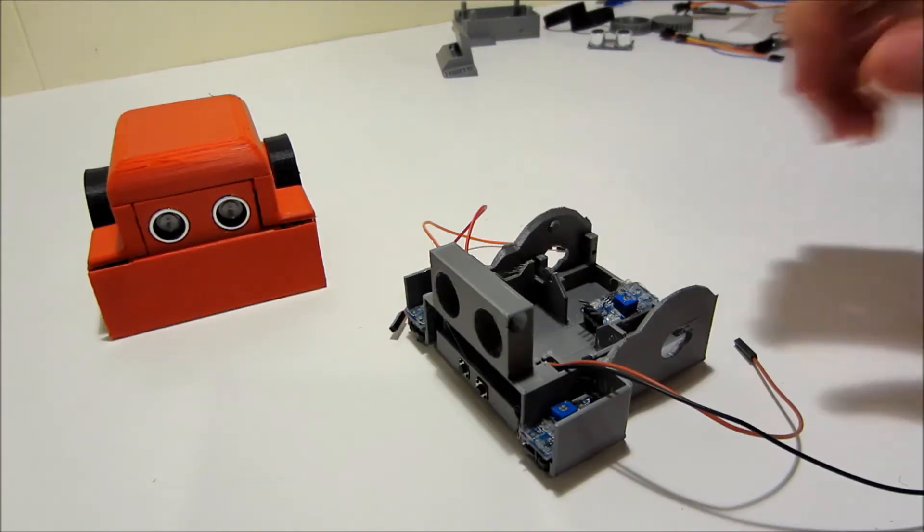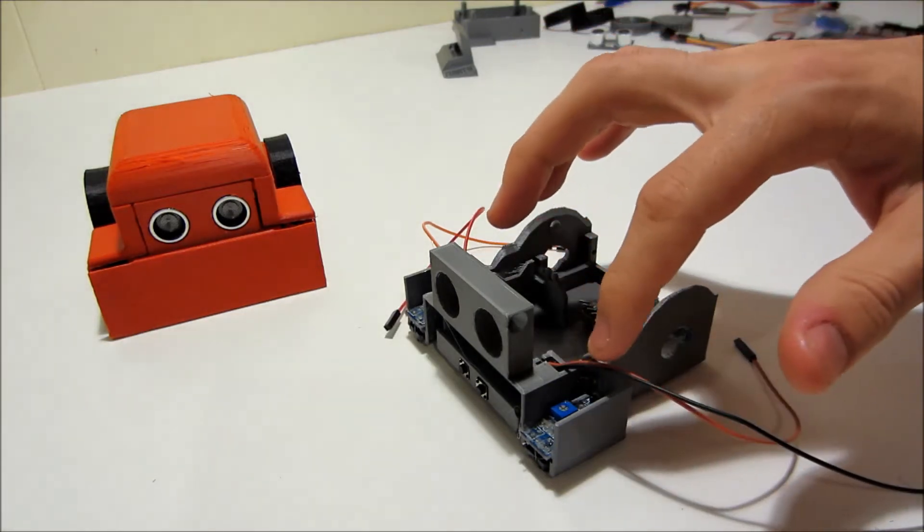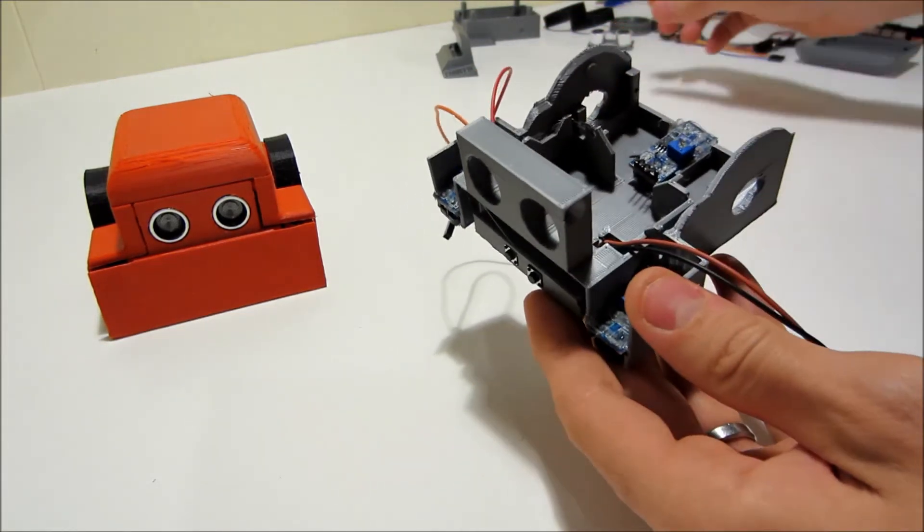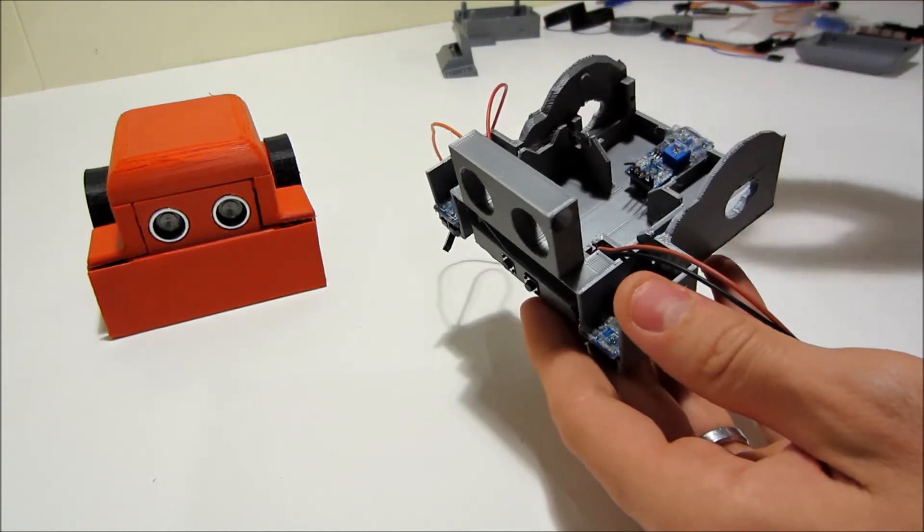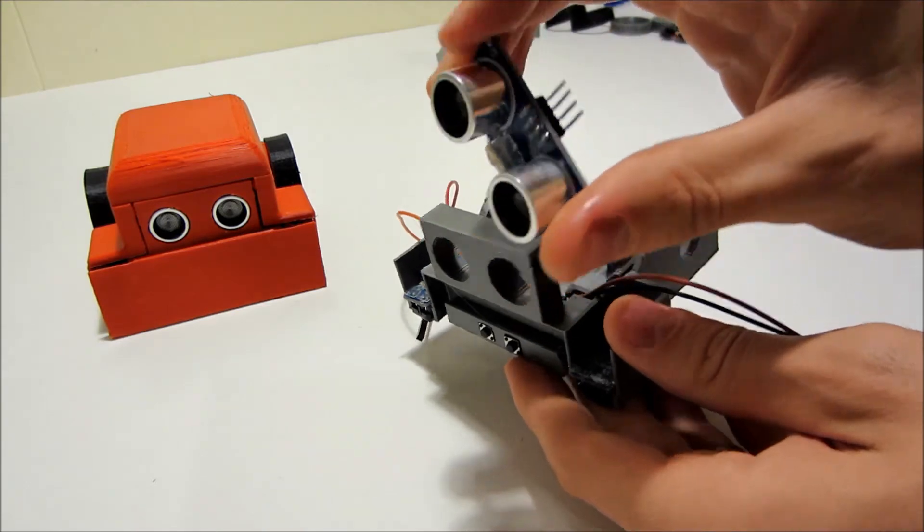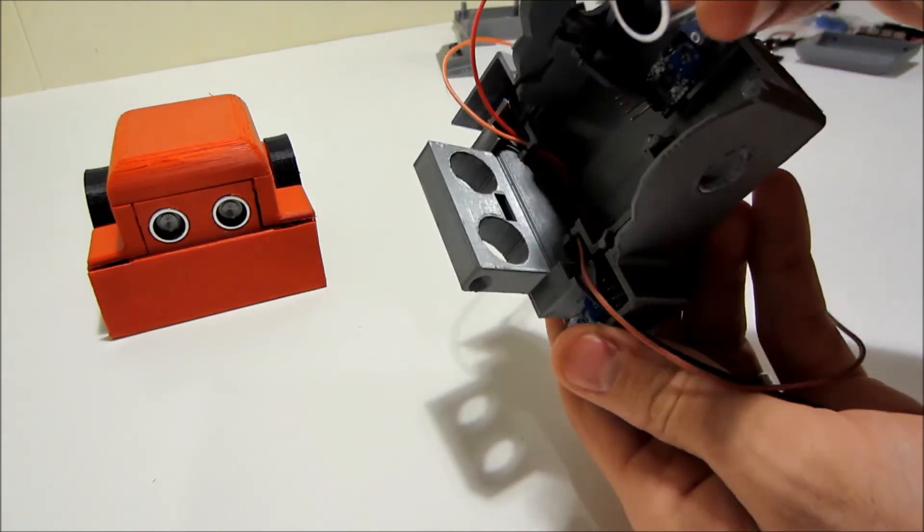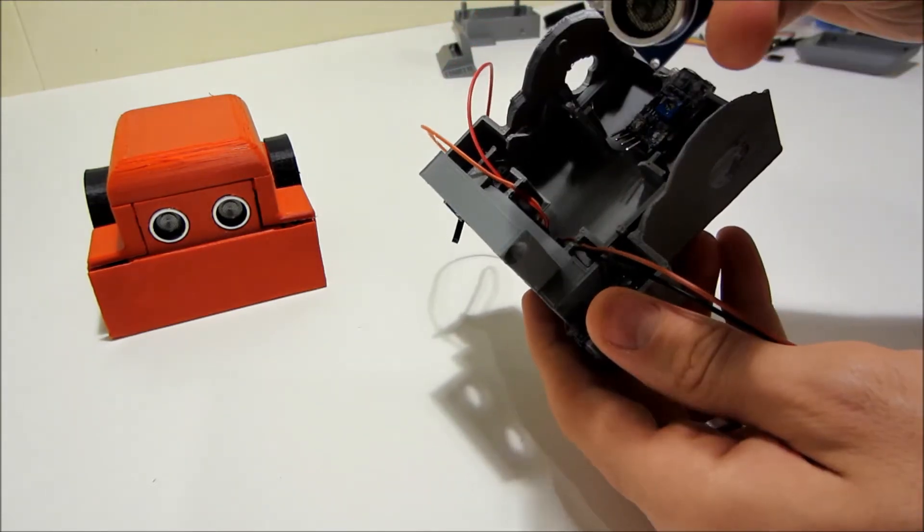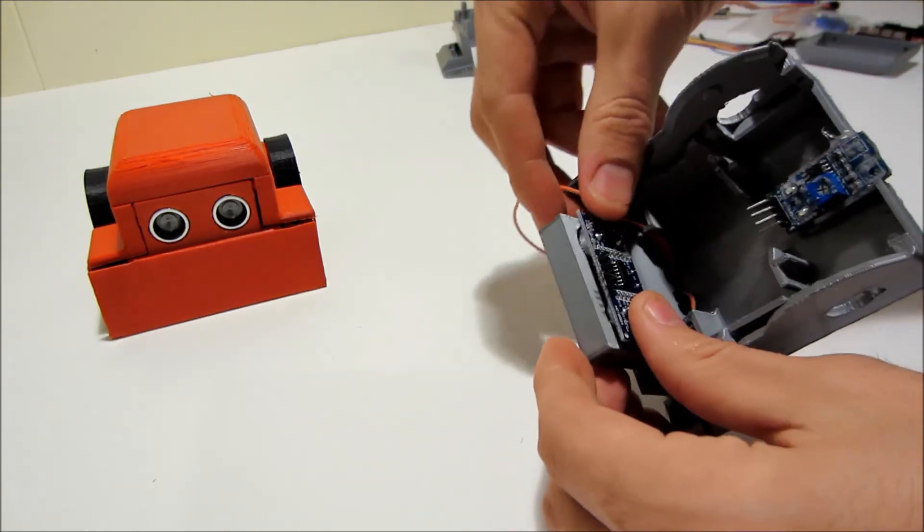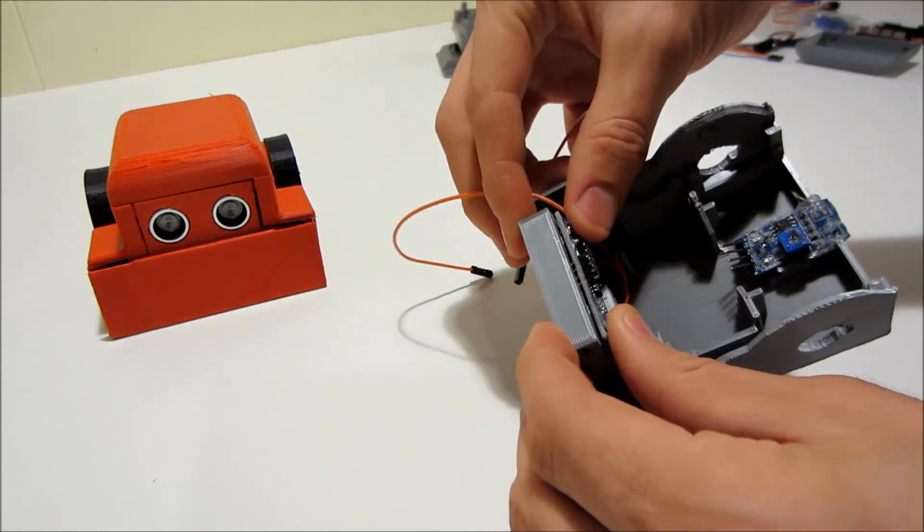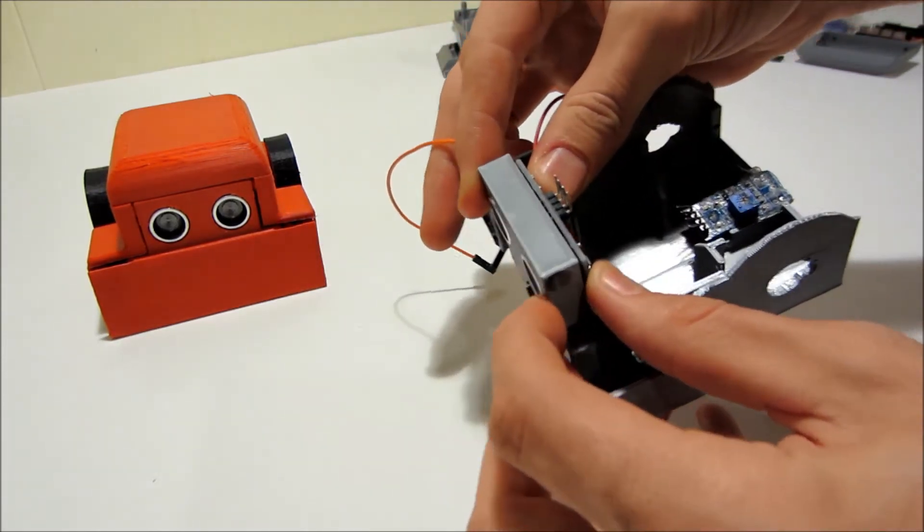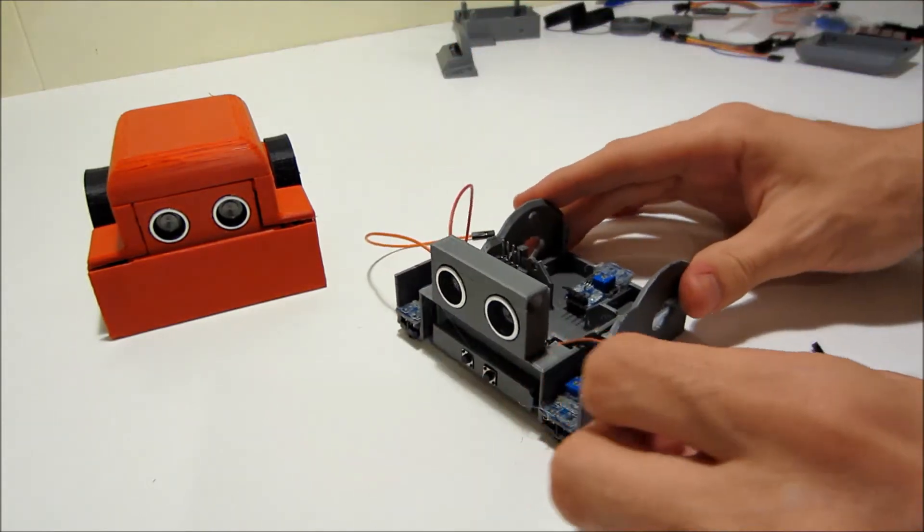I went ahead and applied the glue to these three sensors off camera. Now they're sitting down there firmly. Next thing is to take the HR-SO4 ultrasonic sensor and just press it in there. You can press in, but I've got a little dab of glue on it just for good measure. It presses in there nicely. Nice and even.